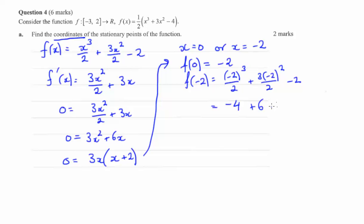Then we get minus 2 here. So minus 4 minus 2 gives you minus 6. Add the 6, you get 0.